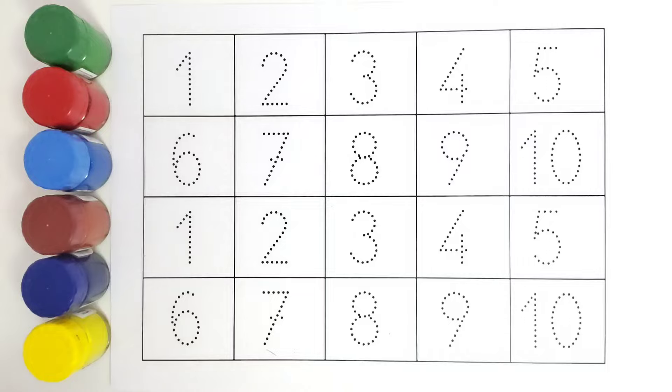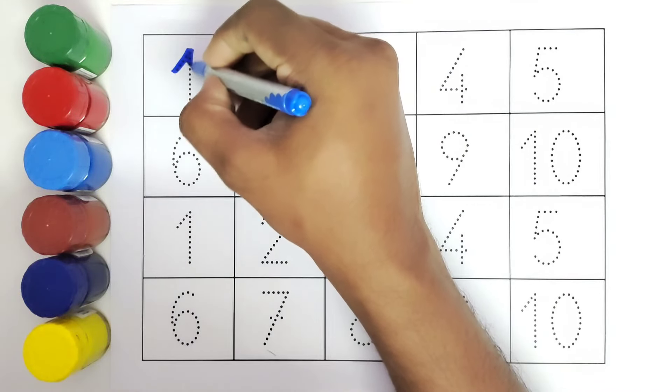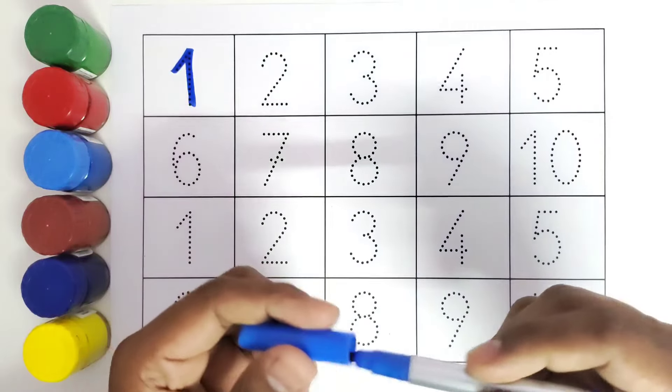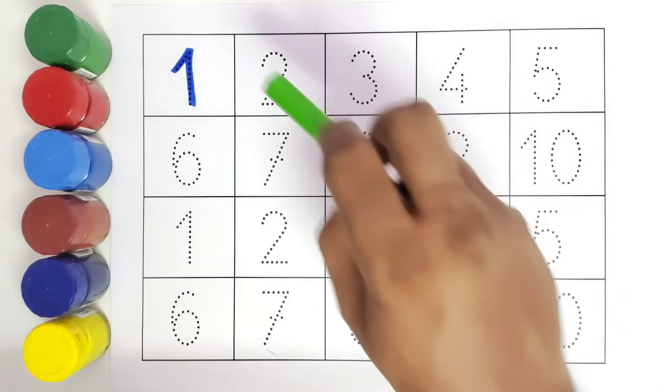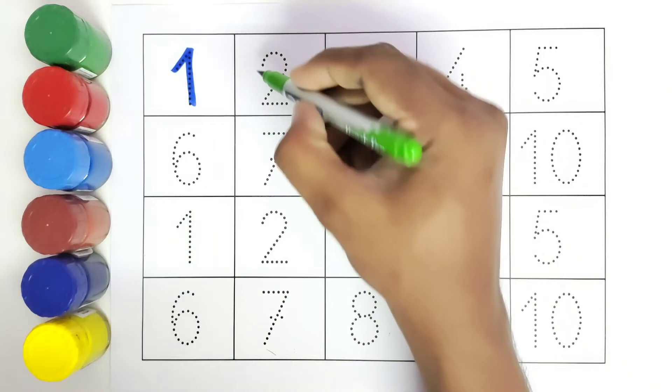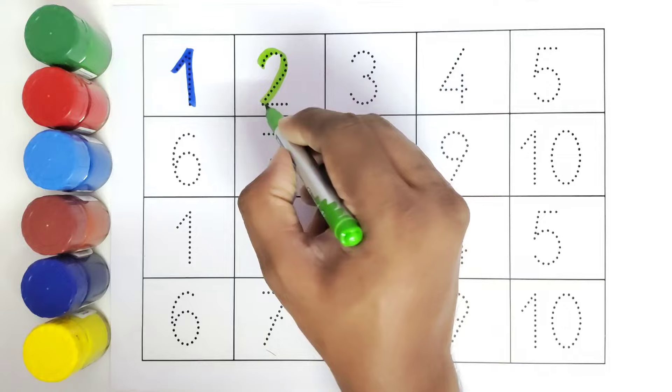Let us get started. We will color all the numbers. This is 1. Number 1. This is 2. Number 2.